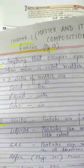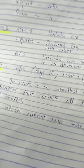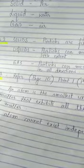Next is question number 4. That is, what is an atom? Does it exist independently? So, the answer to it, an atom is the smallest unit of matter that exhibits all the properties of matter.